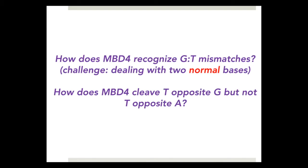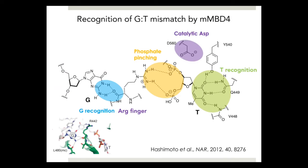We are interested in understanding the mechanism of GT mismatch recognition and glycosylase mechanism, and we used biochemical and structural biology tools to study these. In GT mismatch recognition by MBD4, thymine is flipped out of the duplex and enters the active site, making sophisticated interactions with active site amino acid residues. This is stabilized by phosphate pinching conferred by the arginine finger. The arginine finger also recognizes the estranged guanine, and the substrate thymine is involved in multiple hydrogen bonds with orphan guanine.